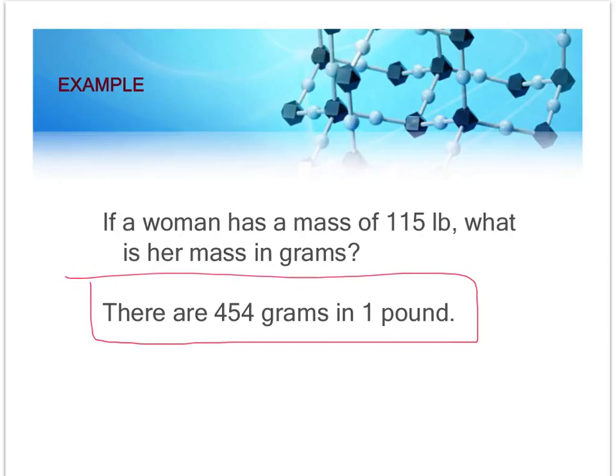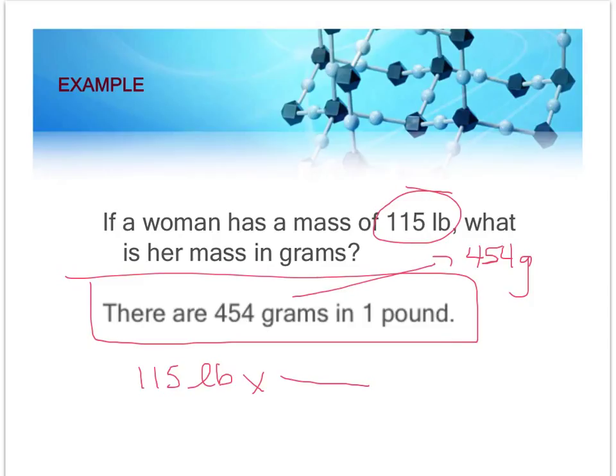Alright, here we go. The given information, and that's the information that's given in the problem, 115 pounds, always start with that. We need to arrange our conversion factor. I'm going to put it in equality form first. 454 gram equals one pound. We need to arrange our conversion factor in ratio form, so that the unit of pound is in the denominator and cancels out. So one pound goes in the denominator, so pounds will cancel out. And the rest of the conversion factor goes in the numerator. 454 grams.